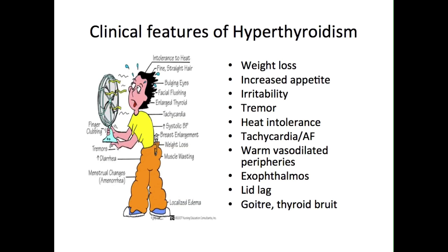Clinical features that can also occur in hyperthyroidism due to other causes include many of the features illustrated in the picture on the left-hand side of the screen, such as muscle wasting, sweating, increased gastrointestinal motility, amenorrhoea, and pretibial myxoedema. However, several signs are more likely to indicate a diagnosis of hyperthyroidism: these include weight loss despite an increased appetite, irritability, tremor, heat intolerance, tachycardia, warm peripheries, exophthalmos, lid lag, and a goiter. The presence of a thyroid bruit is also a strong indicator of active thyrotoxicosis.